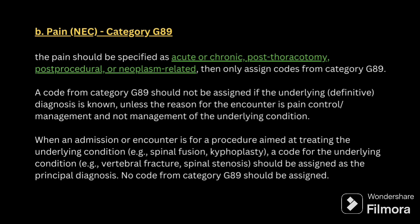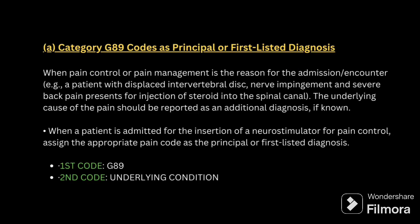The first guideline is Pain Not Elsewhere Classified, code series G89. G89 should be assigned when the pain is specified as acute or chronic pain, post-thoracotomy pain, post-procedural pain, or neoplasm-related pain. A code from G89 should not be assigned if an underlying diagnosis is given.